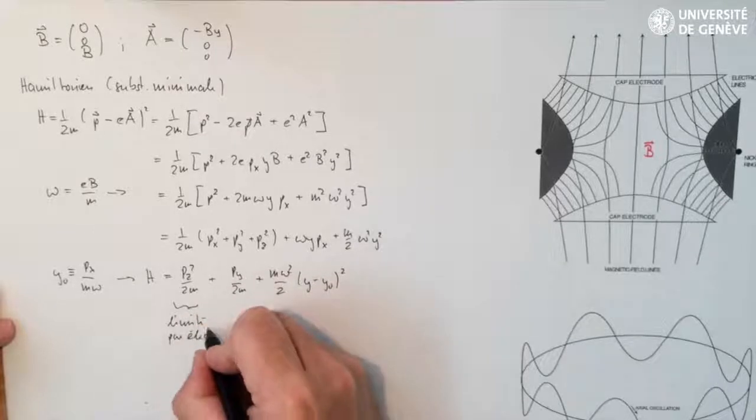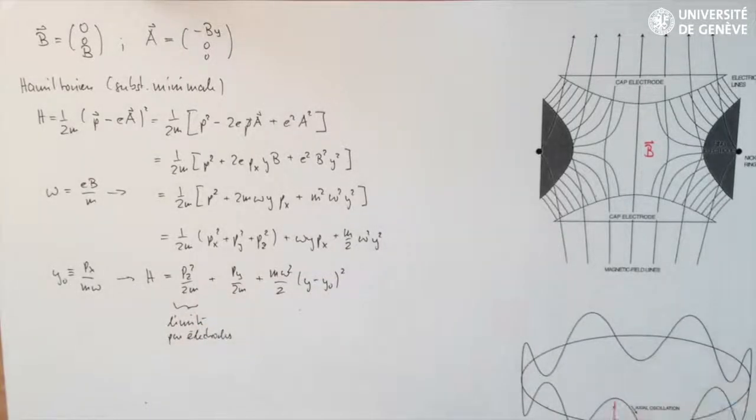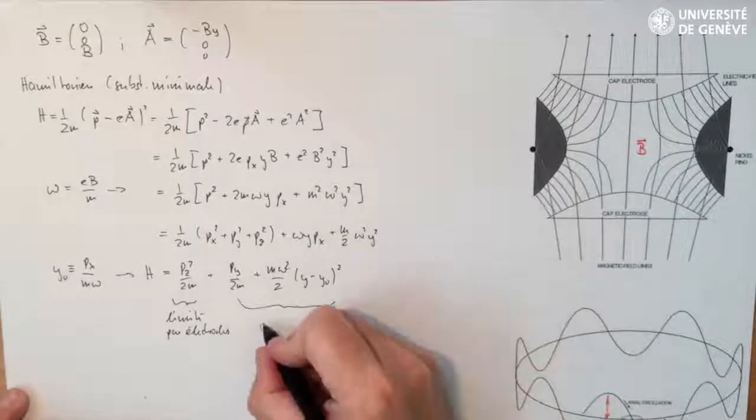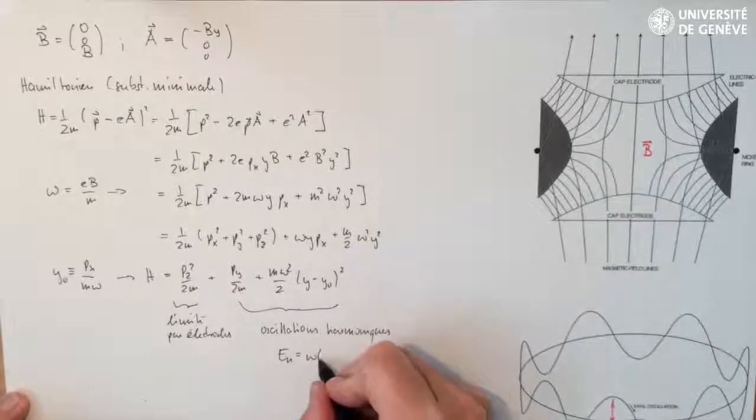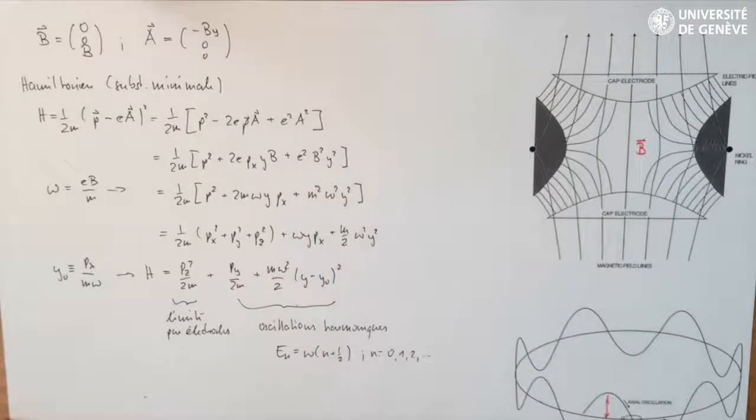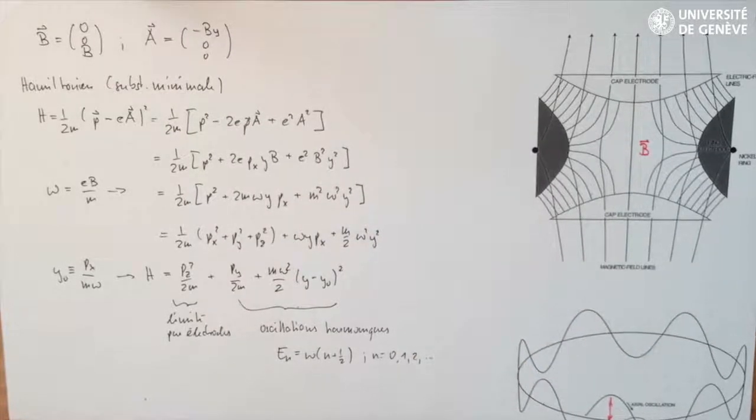The other two terms correspond to harmonic oscillation in the x-y-plane. The energy levels for this oscillation are equal to omega times (n plus 1 half), with n a whole number 0, 1, 2 and so on.